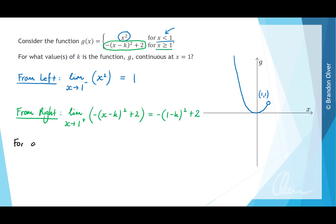We know that for g of x to be continuous, the limit as x approaches 1 from the left hand side must equal the limit as x approaches 1 from the right hand side, which must also equal g evaluated at 1. So we want negative 1 minus k all squared plus 2 to equal 1. That's the right hand limit to equal the left hand limit.